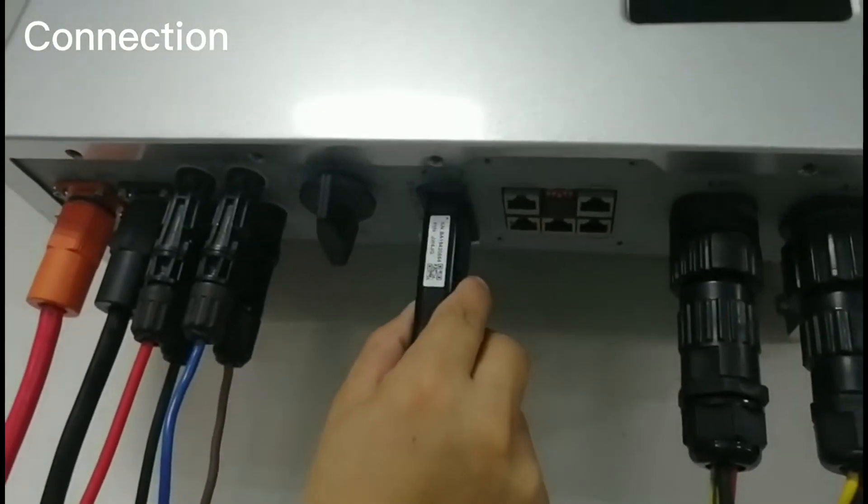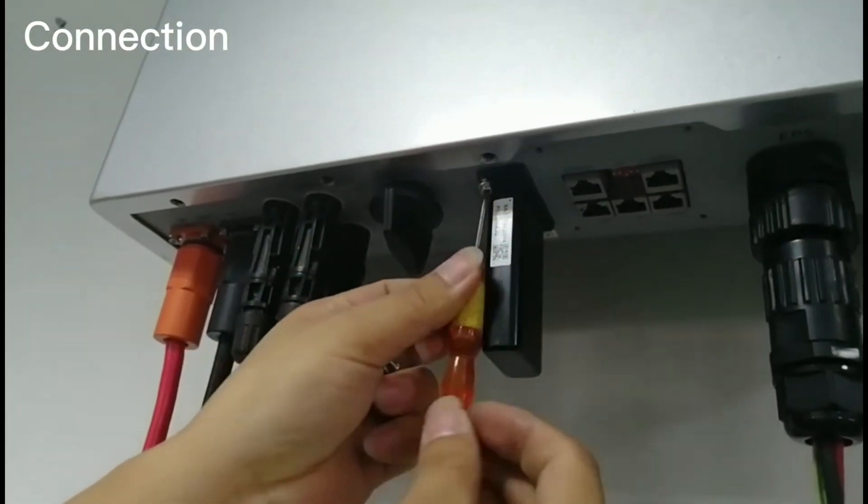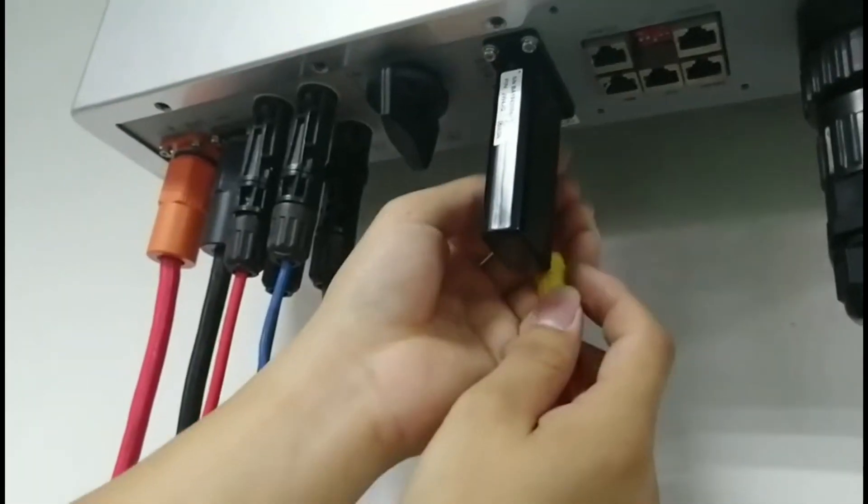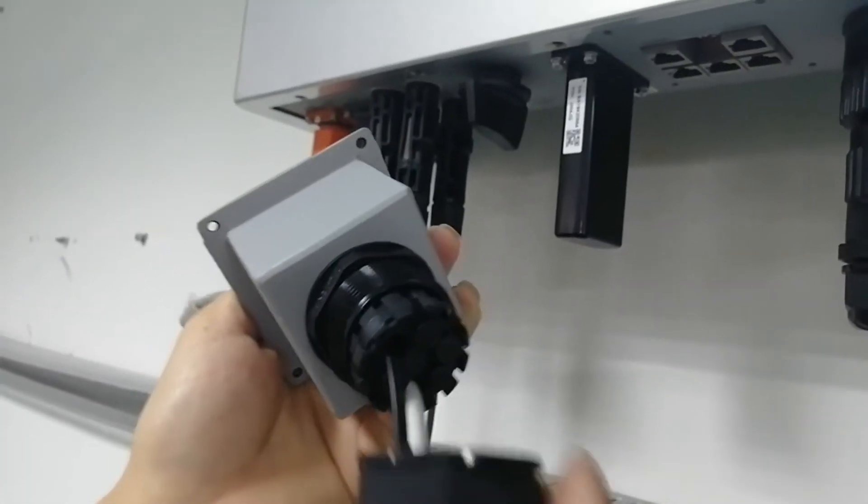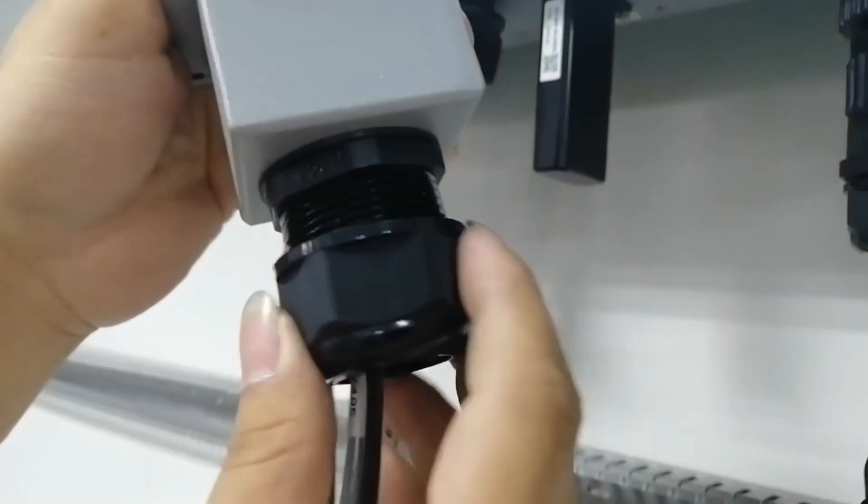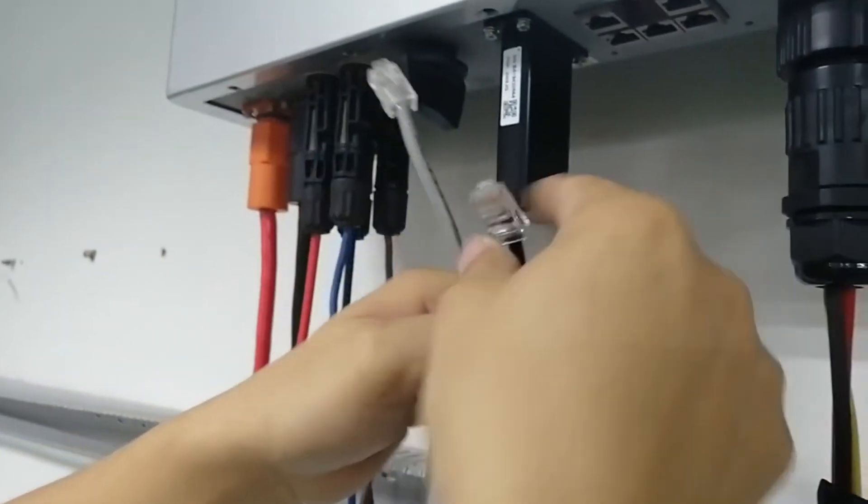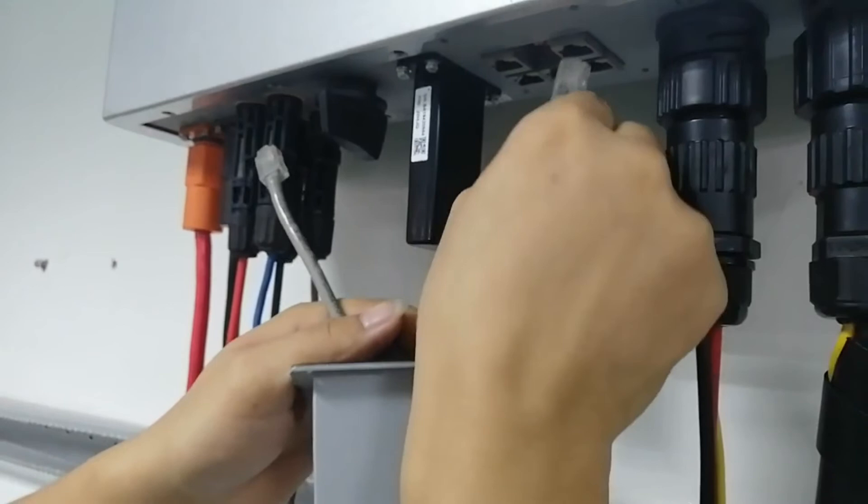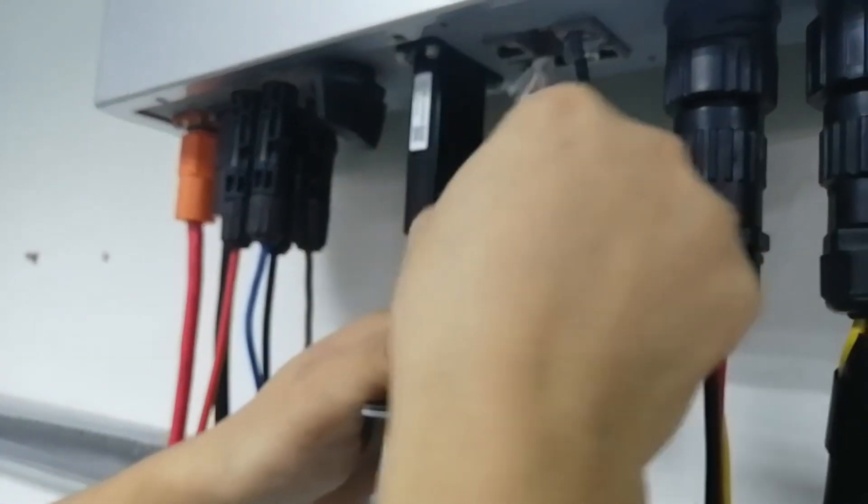Let's put the Wi-Fi dongle in and lock the screws for Wi-Fi dongle. For the communication cable, put the cable through the waterproof cover and put into the terminal. There are CT clamp cables and battery communication cable.